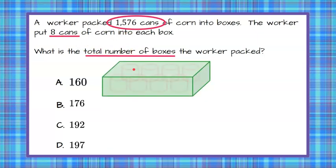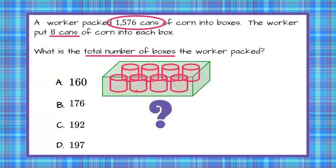So we have a box and inside the box is eight cans and we want to know how many total boxes we have. So we're going to take our 1,576 total cans and we're going to divide it by eight cans each to find out how many boxes we need.